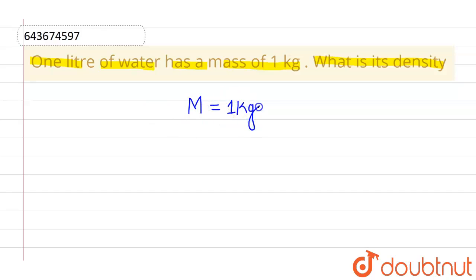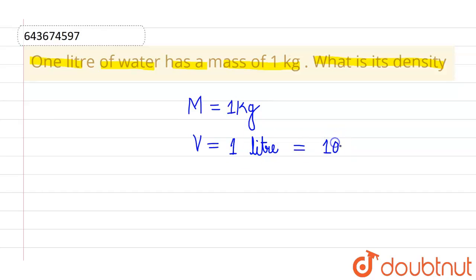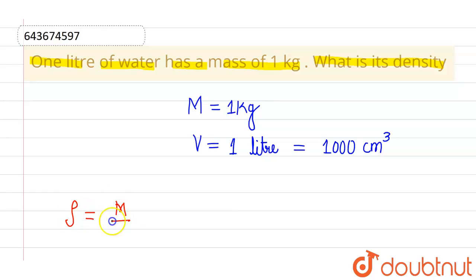We are also given the volume, which is one liter. We know that one liter equals one thousand centimeter cube. So if we try to find its density, the density is given by mass over volume.